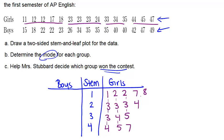Now do the same thing for the boys — just put it on the other side. In the tens range we had 15 and 18, and in the 20s we had 22, 22, 23, and 26. You would continue in the same way for the remaining values.